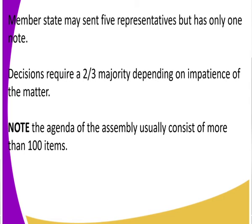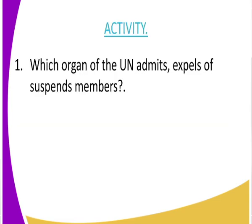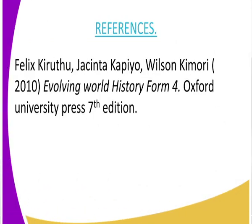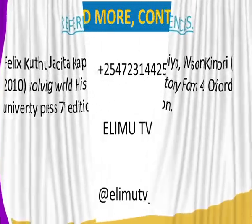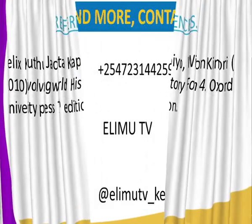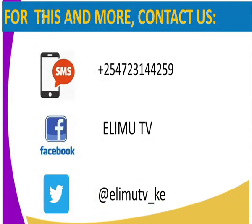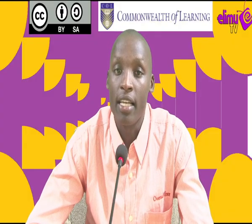We have looked at the General Assembly as the first organ of the United Nations. For your assignment, find out which organ of the UN admits, expels, or suspends members of the assembly. For reference, use the Evolving World: History and Government. This is Elimu TV, your favorite learning channel — watch our videos and learn.